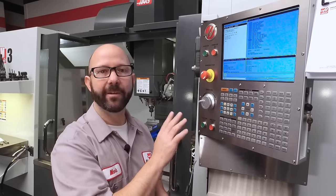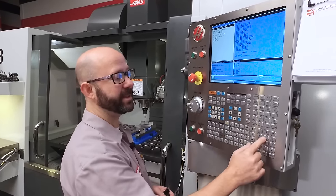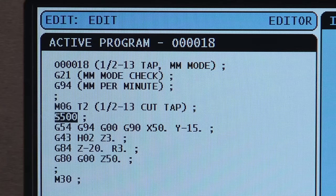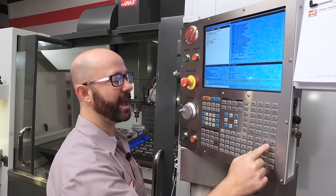Now this is my program for a 1.5-13 tap in millimeter mode. I'm going to enter my RPM as S500, and my feed rate as F976.923.